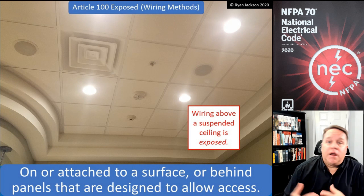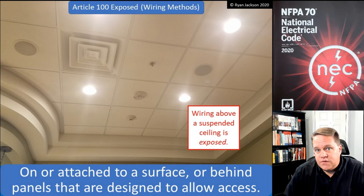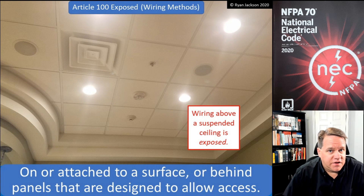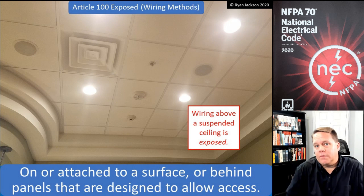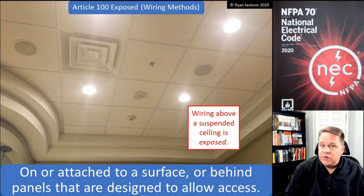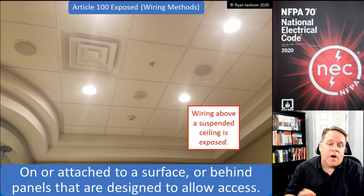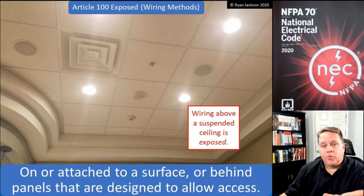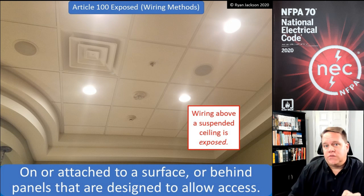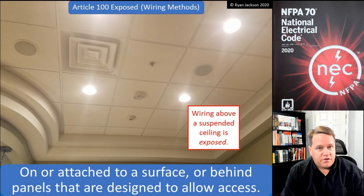Now, exposed wiring methods is a different story. When we talk about wiring methods we mean NM cable, MC cable, rigid metal conduit, EMT, and so on. Exposed wiring methods means on or attached to a surface, or behind panels that are designed to allow access. If it's on the surface, obviously it's exposed — you can see it and touch it. But unlike Webster's dictionary, exposed wiring methods also includes wiring above a suspended ceiling — that's behind panels designed to allow access.